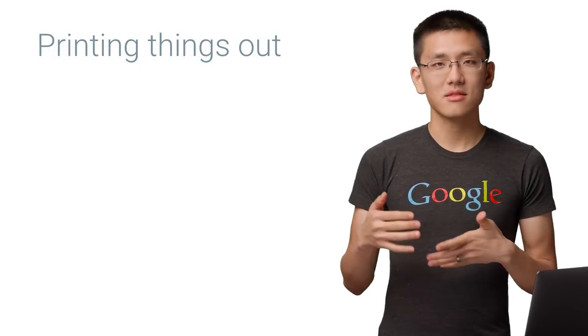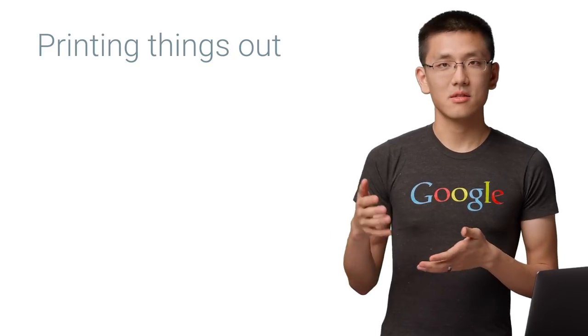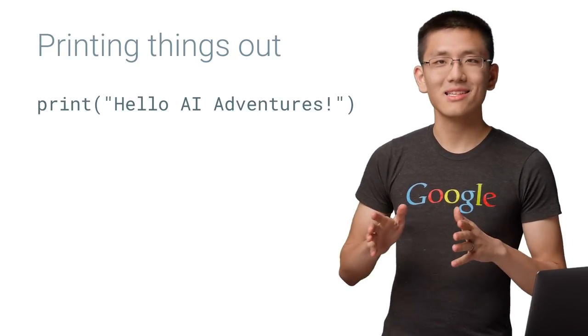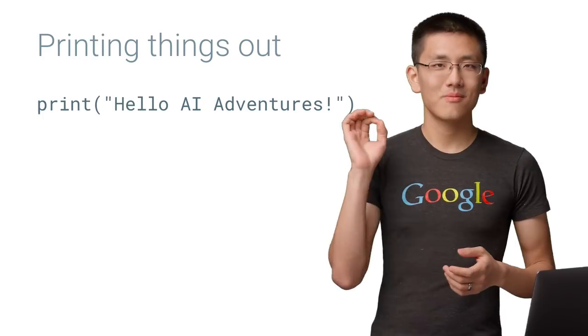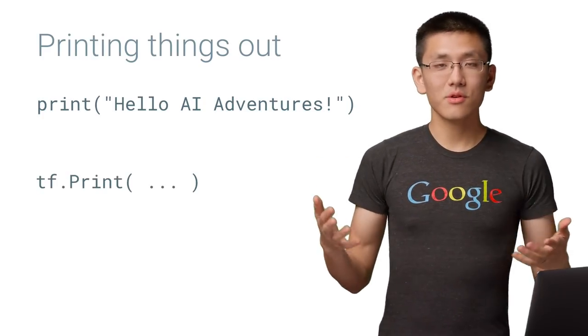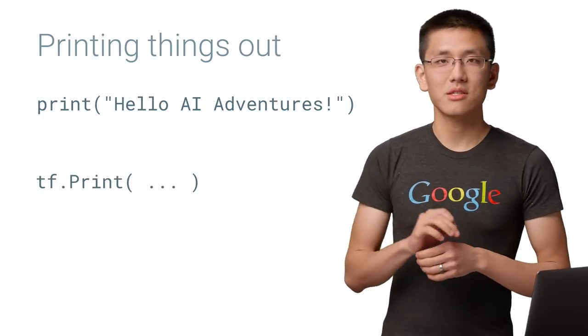There are a couple of ways to get things to print out while writing TensorFlow code. Of course, there's the classic built-in Python function, print. Then there's TensorFlow's print function, tf.print, with a capital P.